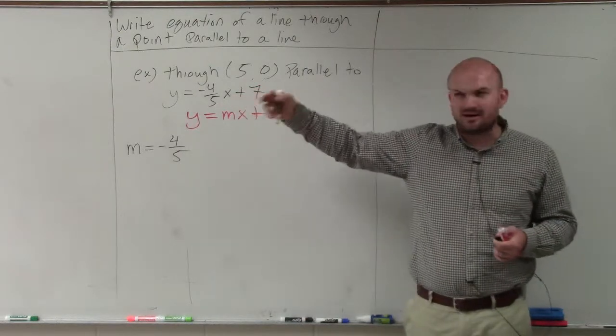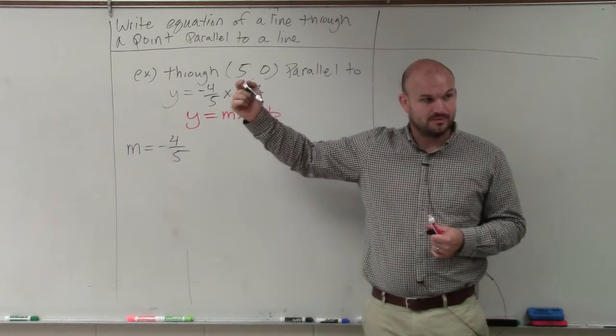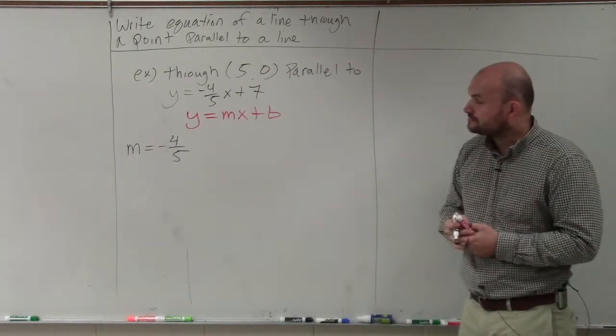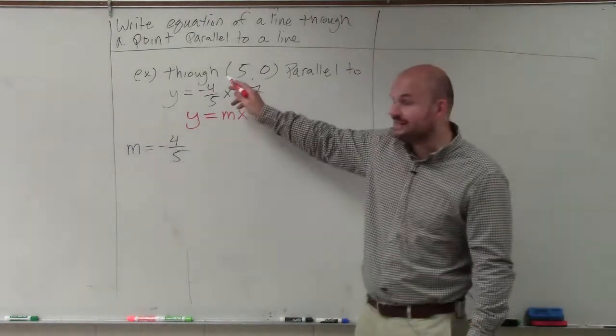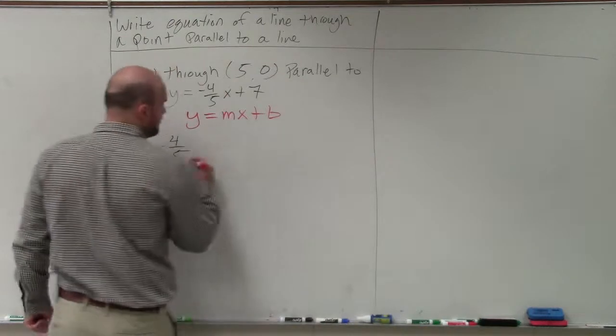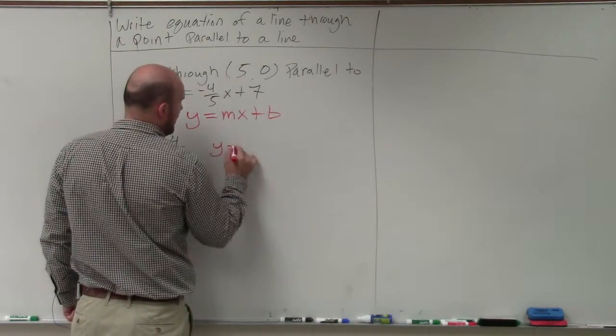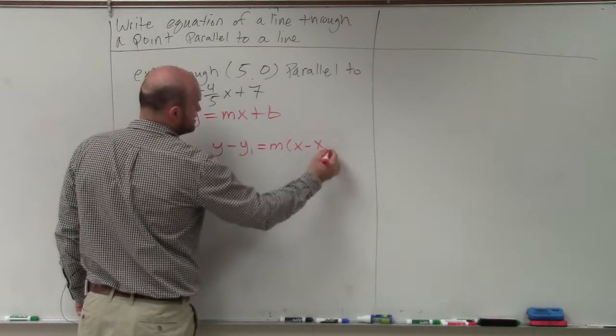Did we do point-slope form last time? Okay, well, to find the y-intercept, we can use point-slope form. Point-slope form looks like this: y - y₁ = m(x - x₁).